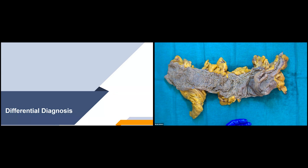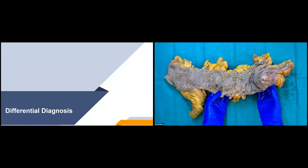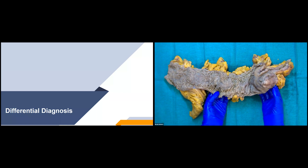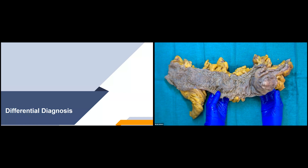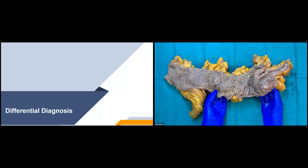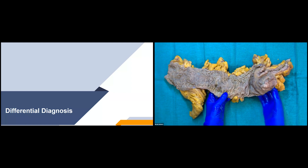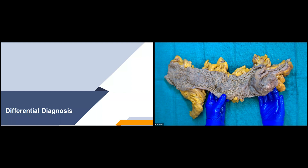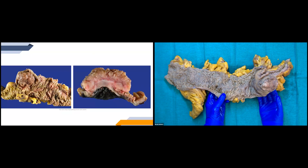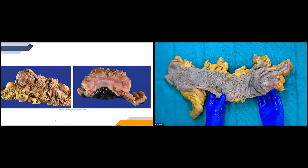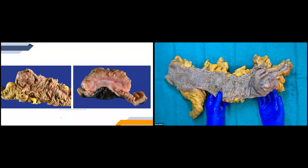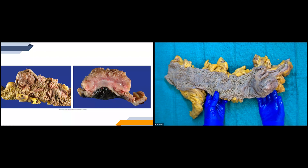Not all right hemicolectomies for malignancy are out for adenocarcinoma. There are a few other types of malignancies to think about when you get a colon cancer case. We'll go through a few different gross features. The first is a typical presentation of adenocarcinoma — you can see the polypoid appearance and the cut surface is really tan and white, which is the typical appearance you would see with the cut surface of an adenocarcinoma.